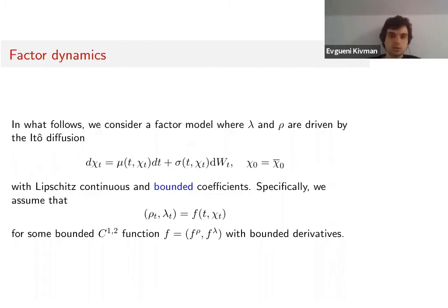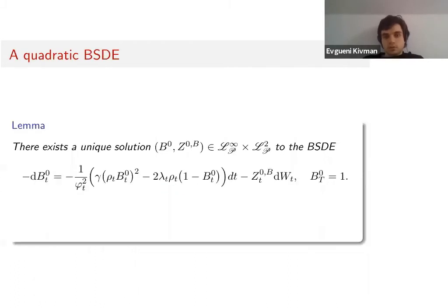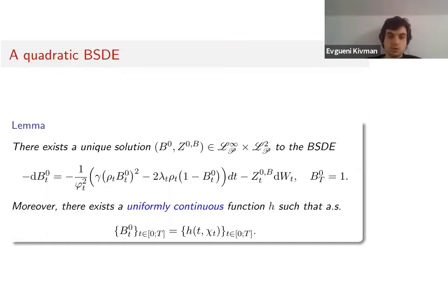Specifically, we assume that 1/λ and 1/ρ are C^{1,2} functions of this diffusion. Our first lemma is the following: we look at this quadratic BSDE, and it has a unique solution B⁰, Z⁰, where B⁰ is bounded. If B⁰ is bounded, then there is only one solution.